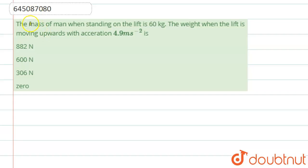Hello students, now we're going to see this question. The mass of a man when standing on a lift is 60 kilograms. The weight when the lift is moving upwards with an acceleration of 4.9 meters per second squared is...